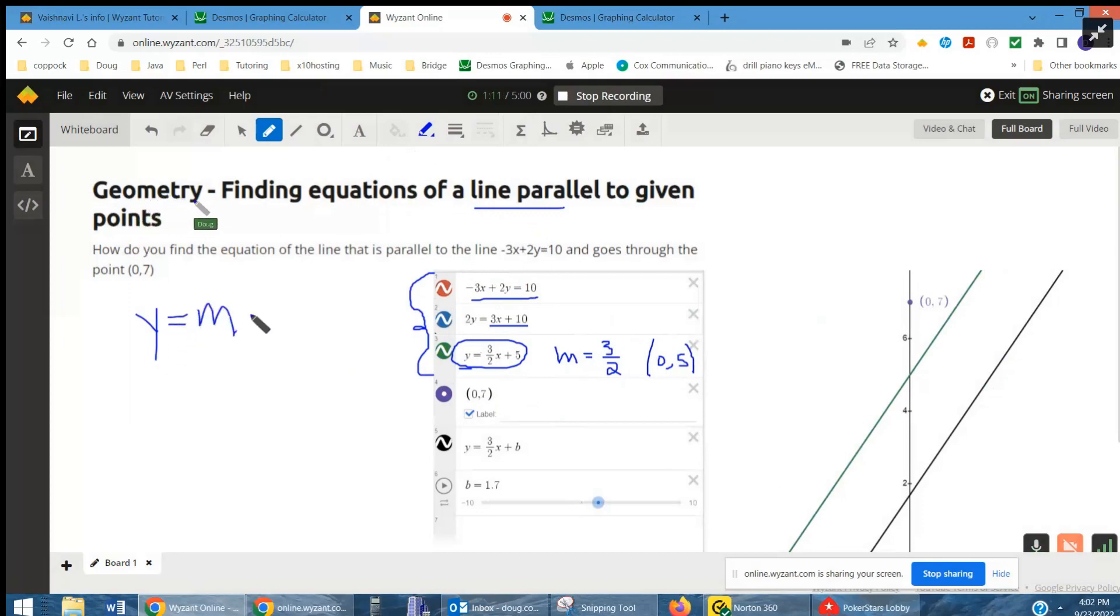So any line like this that has a slope of 3 halves will be parallel to that green line. If we can find the place where that line intercepts the y-axis, we'll have the equation of the line that passes through 0, 7.